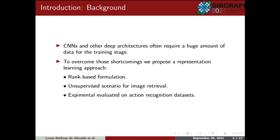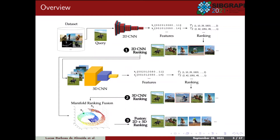The approach is used in an unsupervised image retrieval scenario applied on action-recognition datasets. In order to present an overview of the approach, we have the following figure. Firstly, we use a Transfer Learning formulation based on a 2D-CNN trained on another large-scale dataset. The 2D-CNN is used to rank the images from the analyzed dataset, composing the set of ranked lists Tau2.